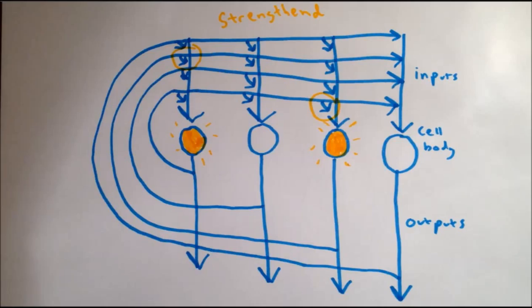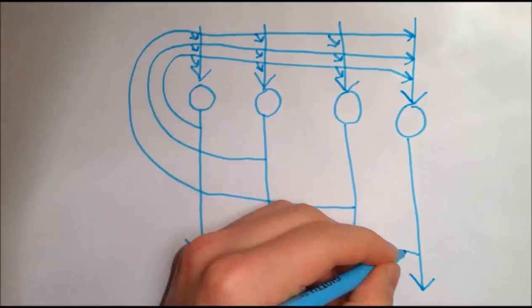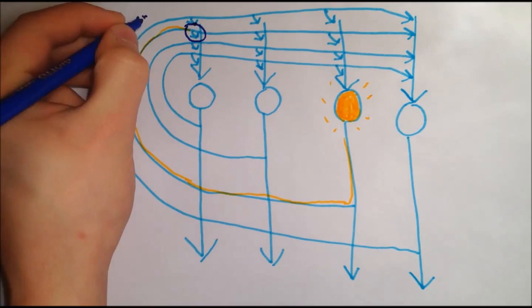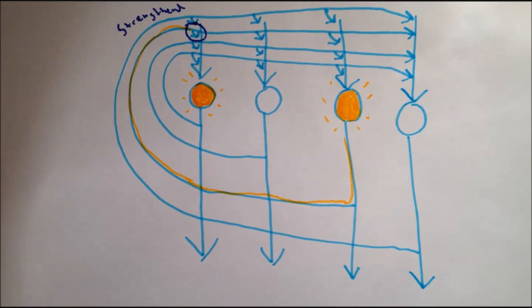This allows for a process called pattern completion. In the future, whenever a feature of the original experience is present, it activates a portion of the previous neurons. These then activate any other neurons that they're strongly connected to, allowing recall of a whole memory from just a part of an experience.